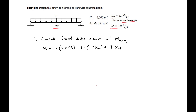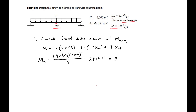We can then plug this into our ultimate moment expression. For a simply supported beam, the moment at mid-span is WL²/8. So our WU is 4.0 kip per foot and our L is 24 feet, giving us an MU of 288 kip-feet. Taking this times 12 to convert to kip-inches, we get 3,456 kip-inches, which we'll use for our design.